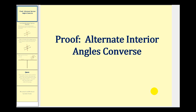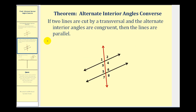Welcome to a proof of the alternate interior angles converse. This theorem states that if two lines are cut by a transversal and the alternate interior angles are congruent, then the lines are parallel. So we want to be able to prove that if angle three is congruent to angle six, or angle four is congruent to angle five, we have parallel lines.